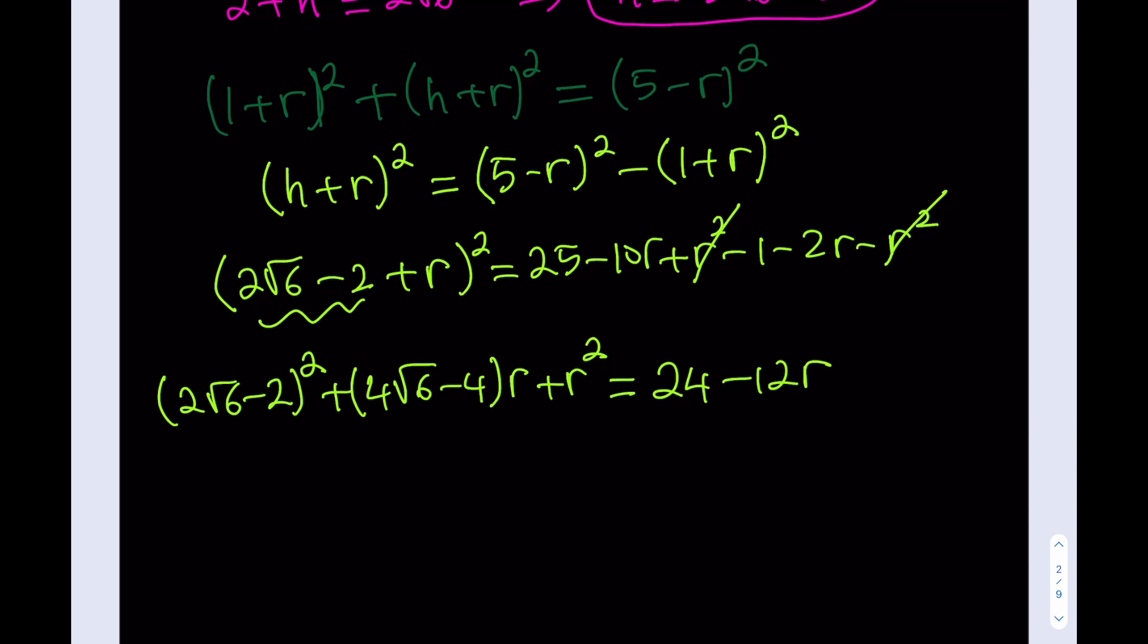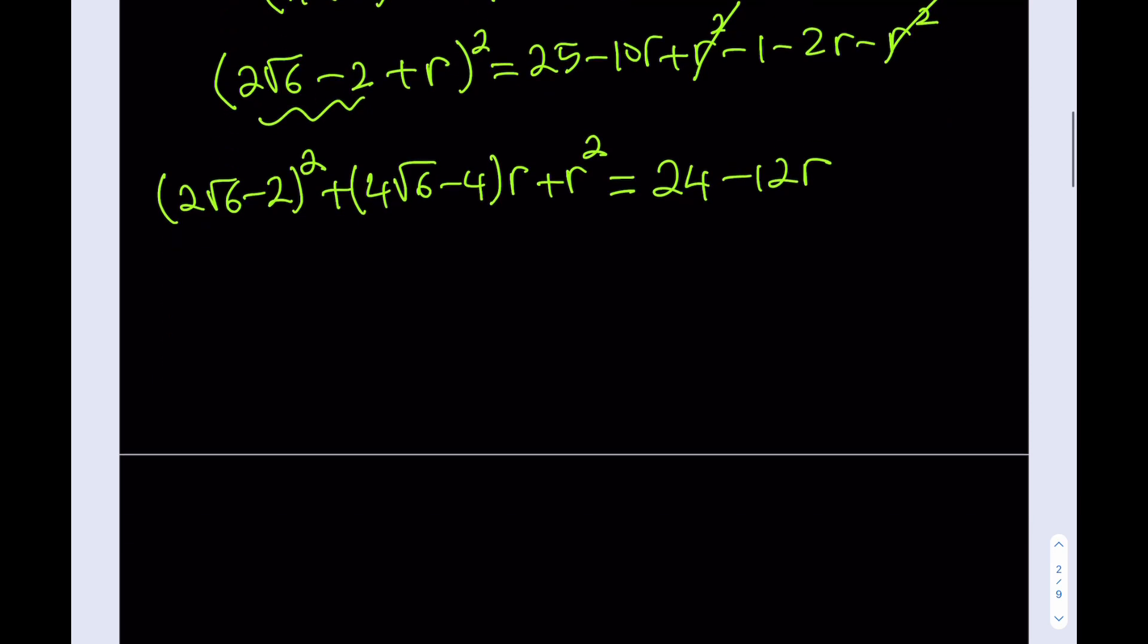Now we are getting a quadratic here. Let's go ahead and solve for r. That's the goal, right? We're trying to find the radius. So let's go ahead and arrange these terms a little bit. r² + (4√6 + 8)r plus this constant here, and then I'll subtract the 24 from it, and everything equals 0. Beautiful.